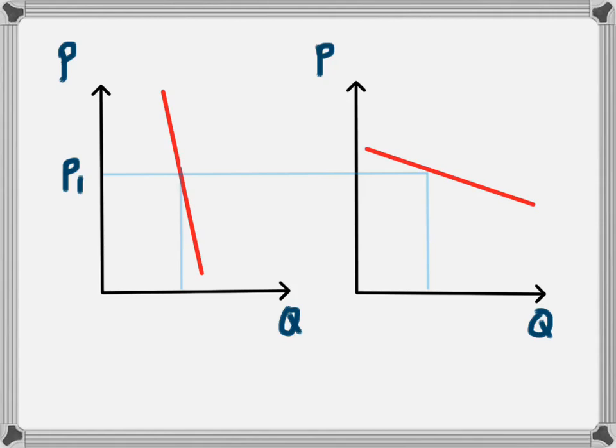Basically we're looking here at two different demand curves. One is a very steep one, one is a very flat one. The very steep one we call an inelastic demand curve and the flat one is called an elastic demand curve. And what is happening is if the price is equal to P1, then we have here the quantity Q1 for these two separate demand curves.